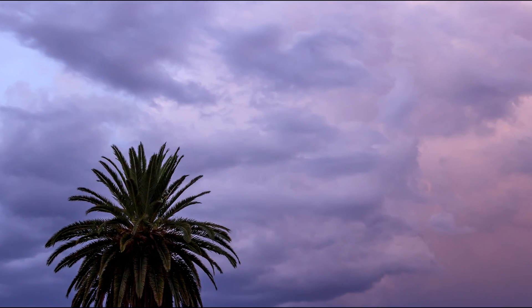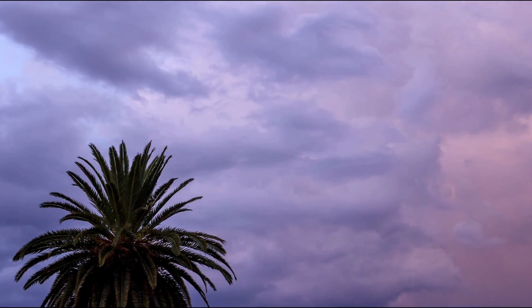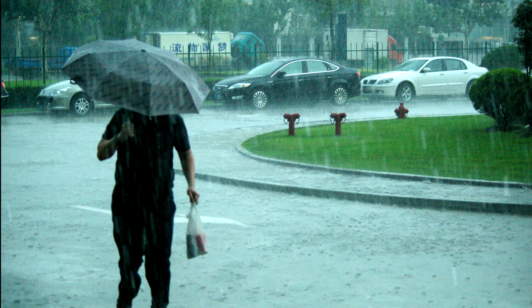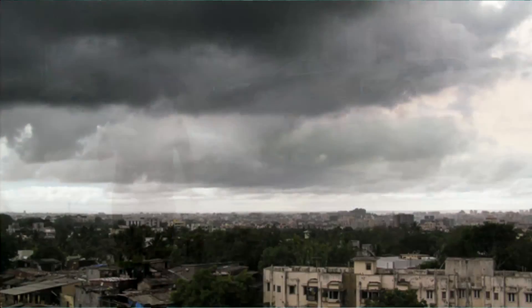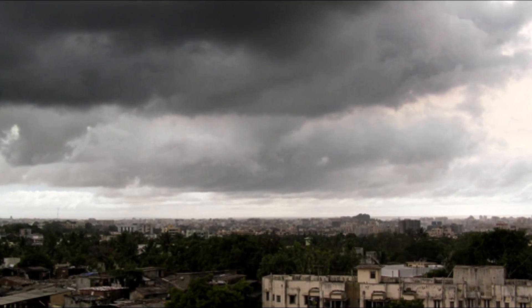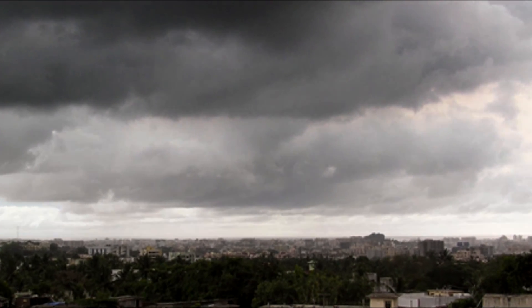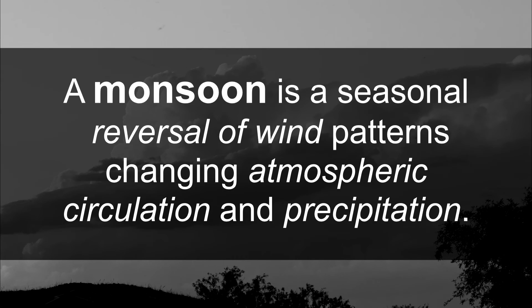Monsoons are not unique to North America. They occur all over the world in places like West Africa, East Asia, and India, and they're important sources of precipitation that ecosystems depend upon. Technically speaking, a monsoon is defined as a seasonal reversal of wind patterns changing atmospheric circulation and precipitation of a specific region.